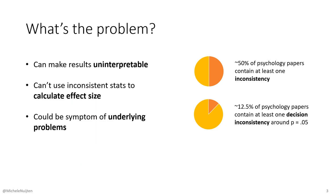Why do we care so much about this? Three main reasons. First, it can make results uninterpretable. A statistical result is a very important ingredient on which we base our conclusions, and if we can't trust these numbers, can we still trust the conclusion? Furthermore, specifically relevant for meta-analysis, we often need these reported statistics to calculate effect sizes — but if we can't trust these numbers, how do we know if we calculate the correct effect size? And finally, this could also be a symptom of underlying problems. Maybe there are additional problems in the underlying data that we cannot even see, so this might be the tip of the iceberg.